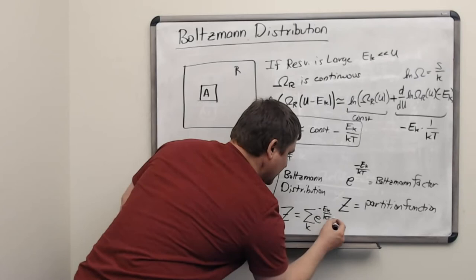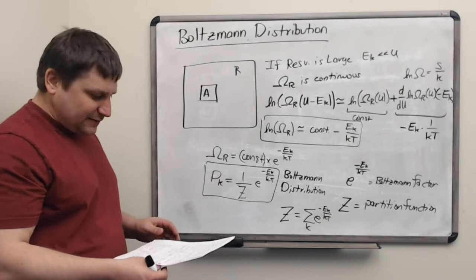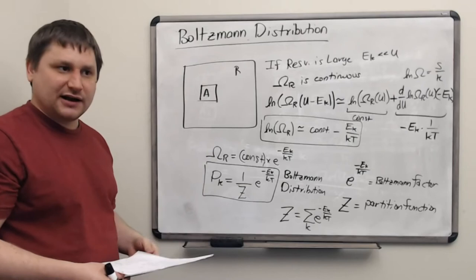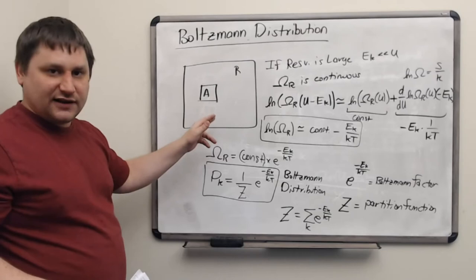The partition function Z is chosen so that all probabilities sum to one; therefore Z equals the sum over all microstates of the Boltzmann factors. This sum may be difficult to calculate but always exists in principle. The Boltzmann distribution specifies a temperature T and tells us that high-energy states are less likely and low-energy states are more likely — quite different from the micro-canonical ensemble approach.